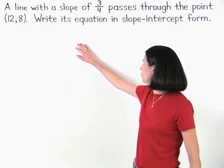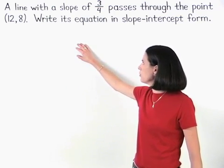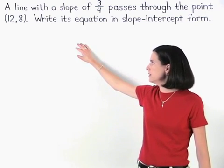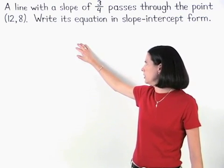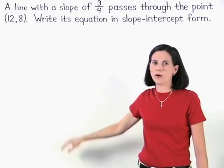A line with a slope of 3 fourths passes through the point 12, 8. Write its equation in slope-intercept form.